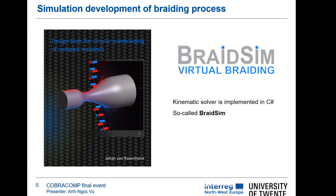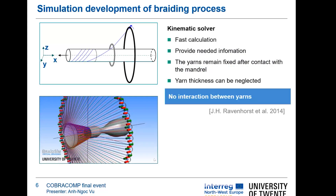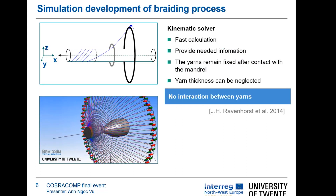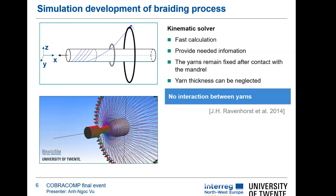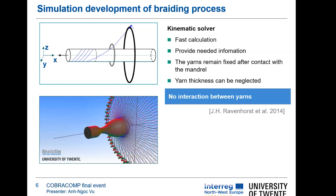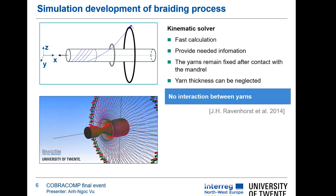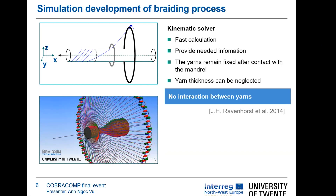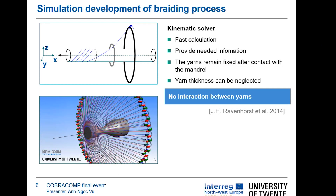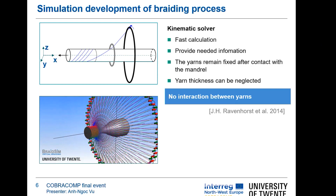Previously, our group developed a software which is able to simulate the overbraiding process. The core of the software is based on a kinematic solver, which provides very fast calculation and the needed information. One characteristic is that the yarn remains fixed after contact with the mandrel, yarn thickness can be neglected, and there is no interaction between yarns — meaning the yarn can be modeled individually.